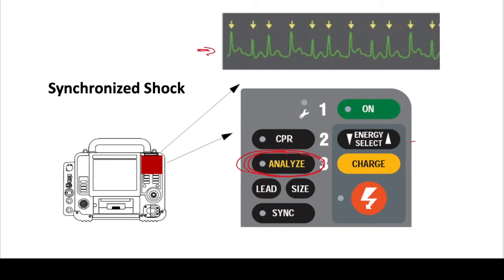Whenever you're going to be doing a synchronized cardioversion, it's important to press the sync button. That's what pops up the little arrows, and those arrows are indicative of the QRS complex. When you press sync, look at the EKG on the defibrillating machine and make sure those arrows — or notches or stars, whatever the machine shows — are lining up with the QRS complex. If they're not, you have to re-sync it: click sync again, or analyze and then sync, until those indicators line up with the QRS complex.